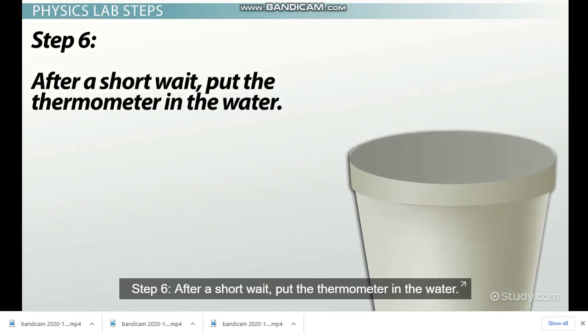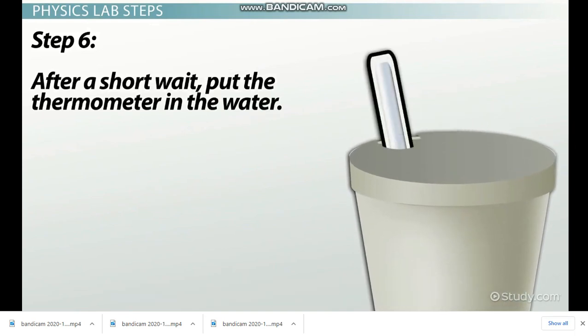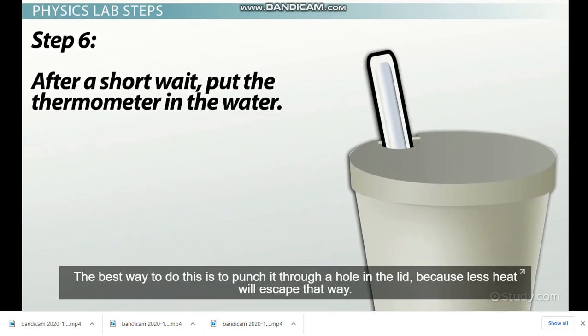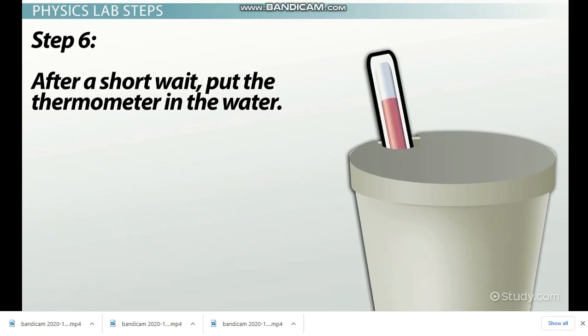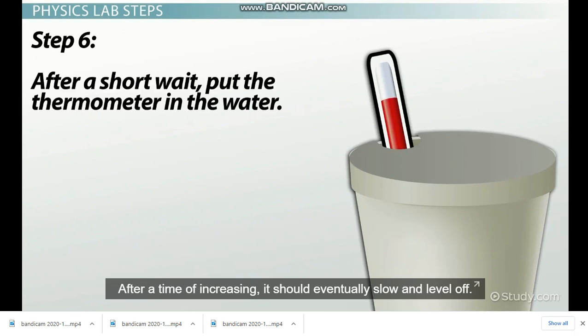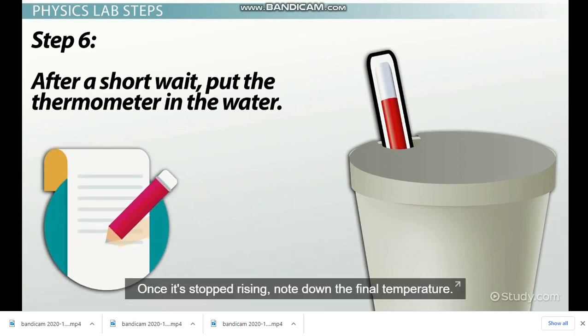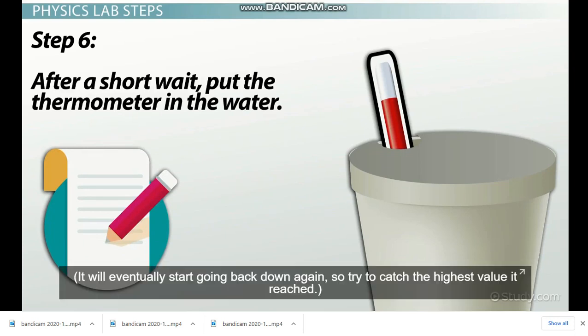Step 6: After a short wait, put the thermometer in the water. The best way to do this is to punch a hole through the lid because less heat will escape that way. Watch the temperature on the thermometer. After a time of increasing, it should eventually slow down and level off. Once it stopped rising, note down the final temperature. It will eventually start going back down again, so try to catch the highest value it reached.